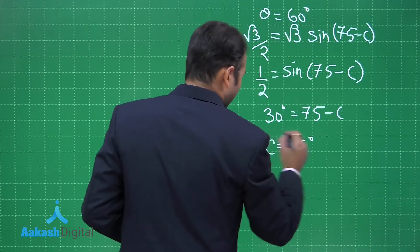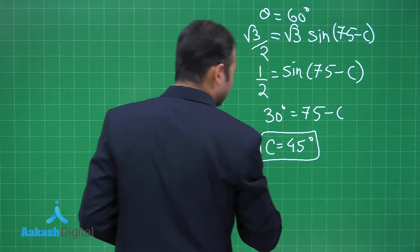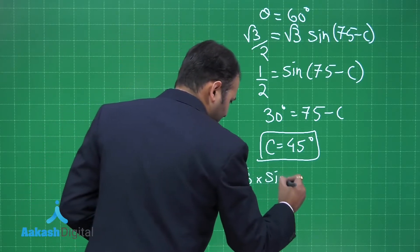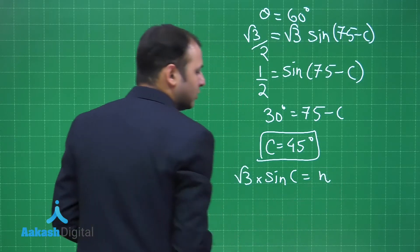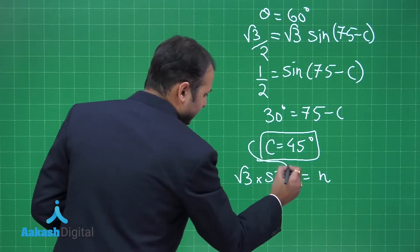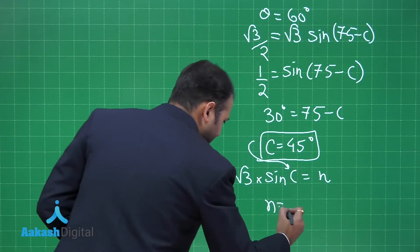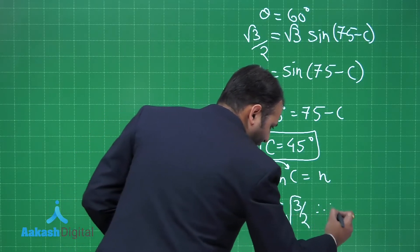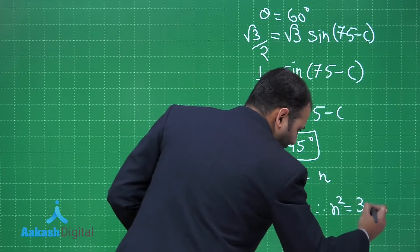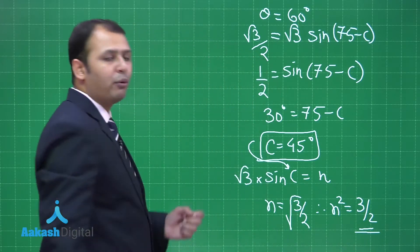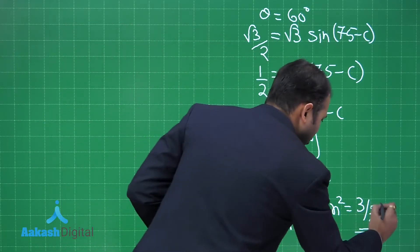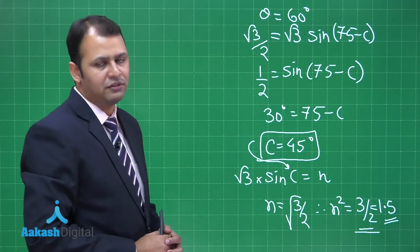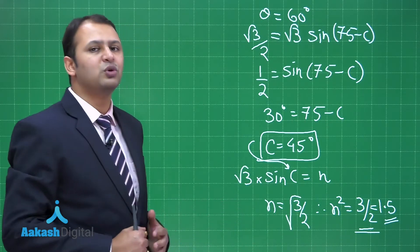Substituting C = 45° into equation 1: n = √3 × sin 45° = √3 × (1/√2) = √3/√2. Therefore, n² = 3/2 = 1.5. The right answer to this question is 1.5. Now let's move on to the next question.